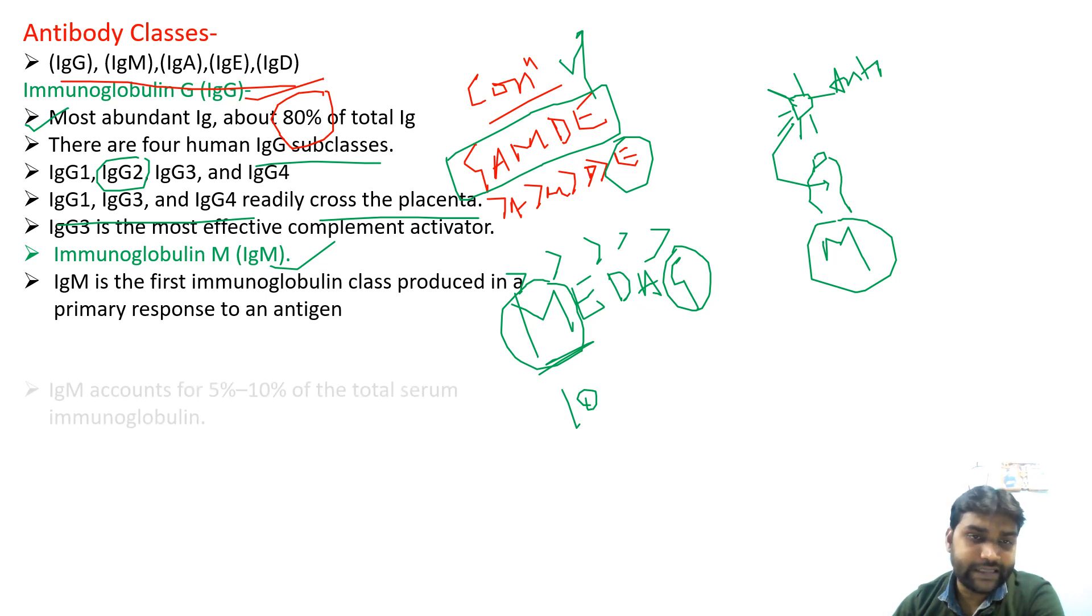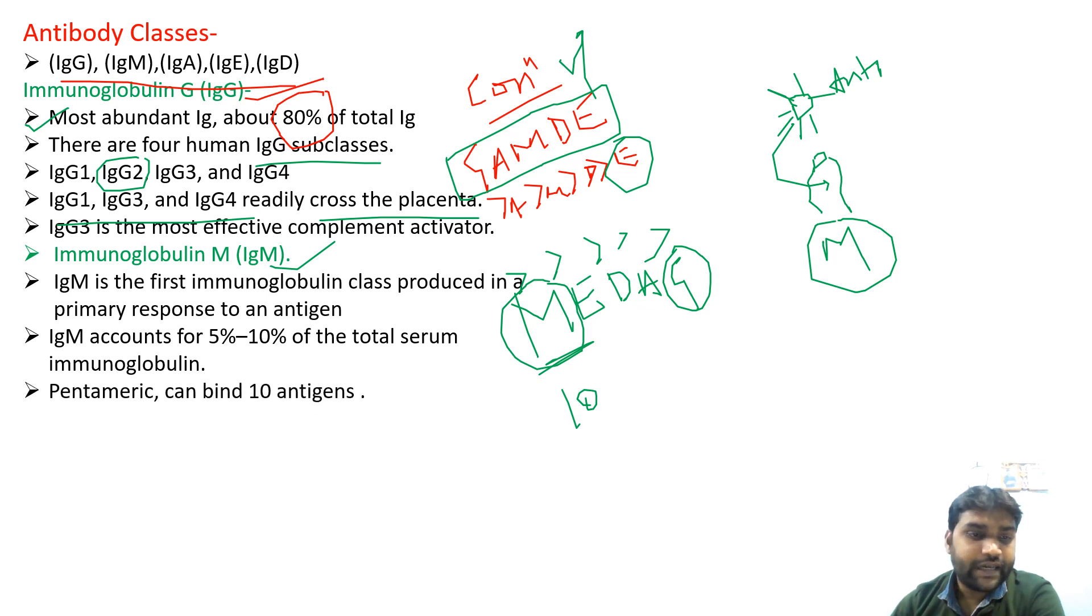If any pathogen enters your body, then what is IgM? IgM is the first immunoglobulin class produced in a primary response to an antigen. This is IgM. IgM is the first immunoglobulin class. Next, it is pentameric, having five subunits.